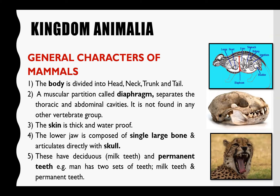Body مختلف regions میں divide ہوتی ہے: اس میں head region، neck region، trunk کے اندر chest region، abdominal region، pelvic region آتا ہے، اور اس کے بعد tail ہوتی ہے جو کہ pelvic region کے ساتھ connected ہوتی ہے۔